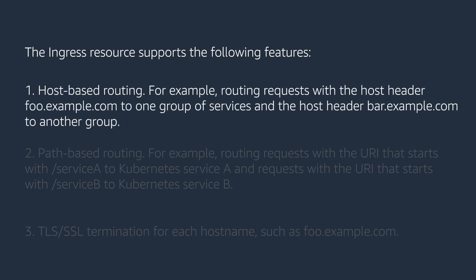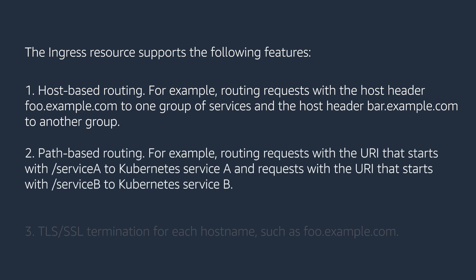The Ingress resource supports the following features. Host-based routing — for example, routing requests with the host header foo.example.com to one group of services and the host header bar.example.com to another group. Path-based routing — for example, routing requests with the URI that starts with /serviceB to Kubernetes service B. TLS/SSL termination for each hostname, such as foo.example.com.